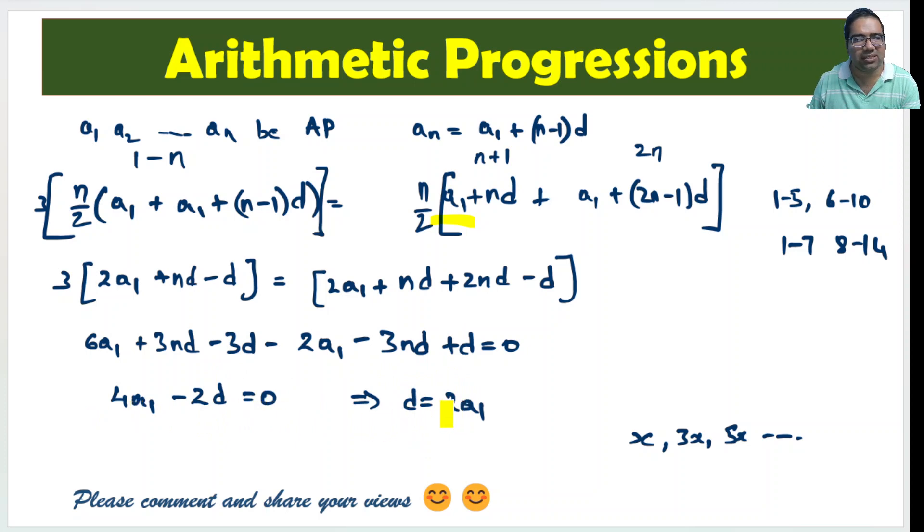We are left with, if this has to be 0, that means d is equal to 2a1. What is a1? a1 is the first term. What is d? d is the common difference. The common difference should be equal to two times the first term. What does that mean? If first term is x, then d will become 2 times of first term. That is d is always 2x. So, second term is x plus 2x. Third term is 3x plus 2x. Fourth term is 5x plus 2x.